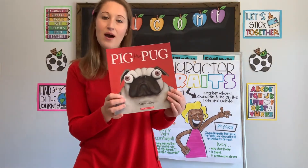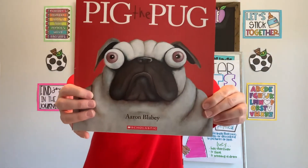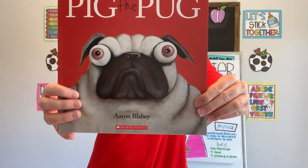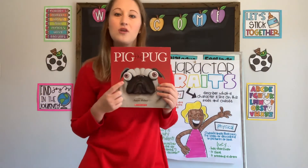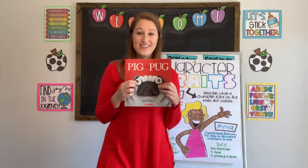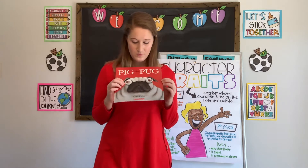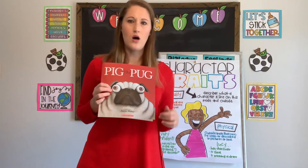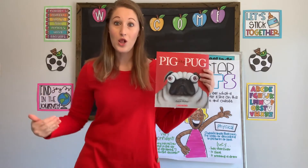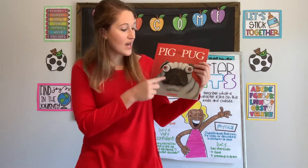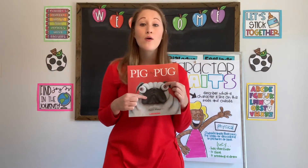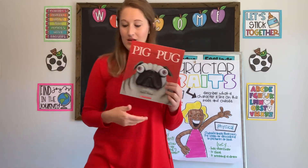Let's try the next one: Pig the Pug. Take a closer look at him. How could you describe Pig's physical traits? He's small, he's a dog. Maybe he's fat or large. He has big eyes. He's white with brown. So we're describing how he looks.